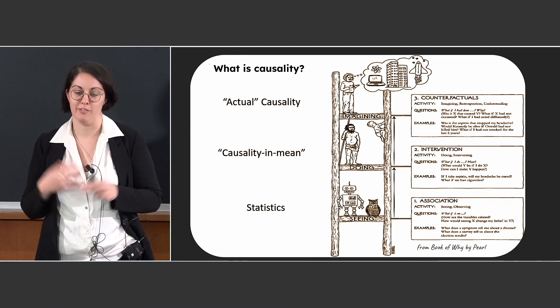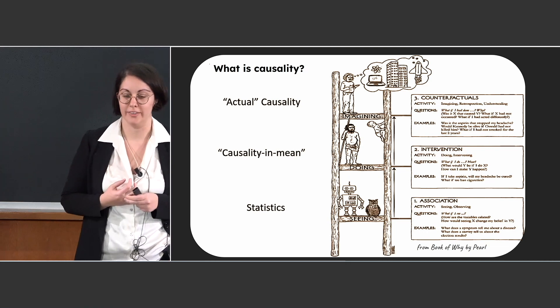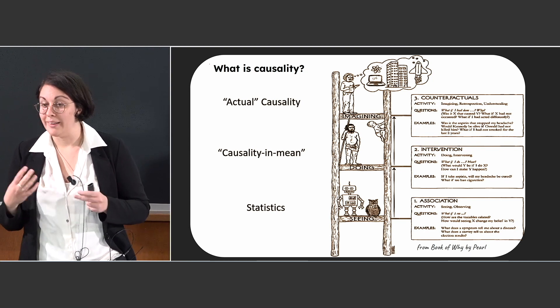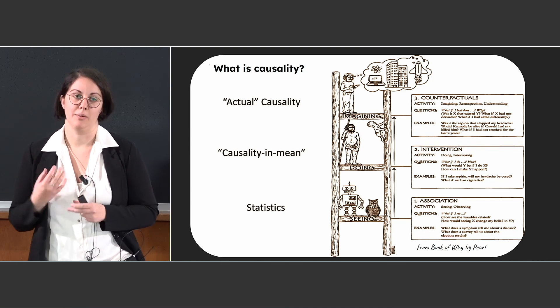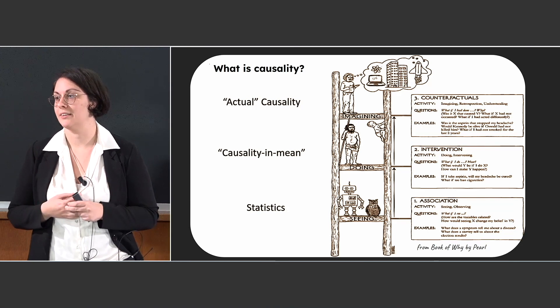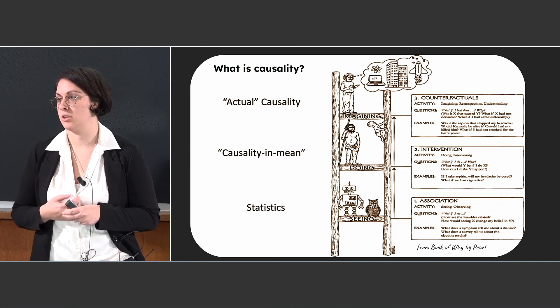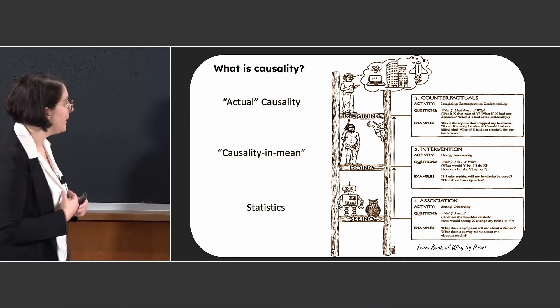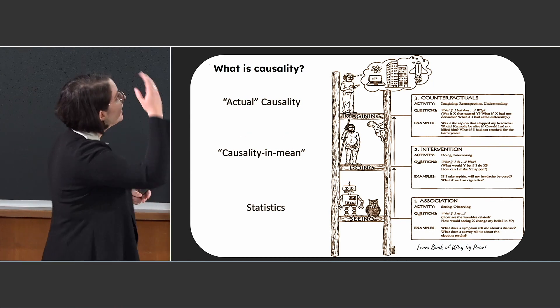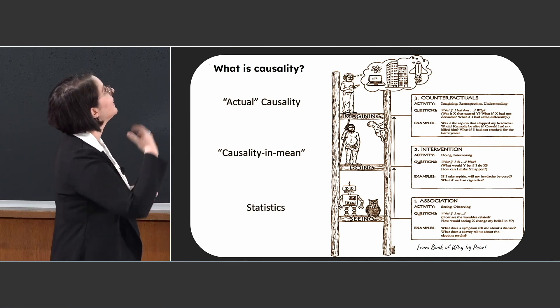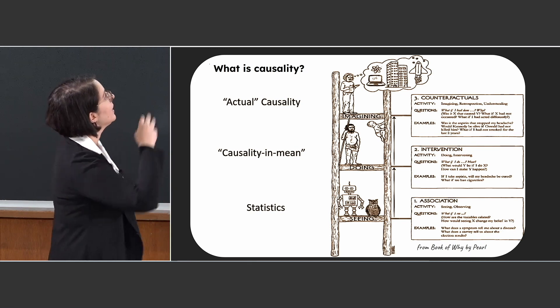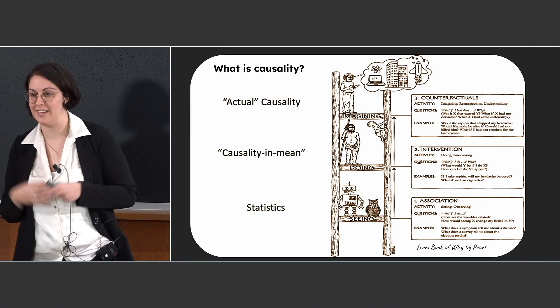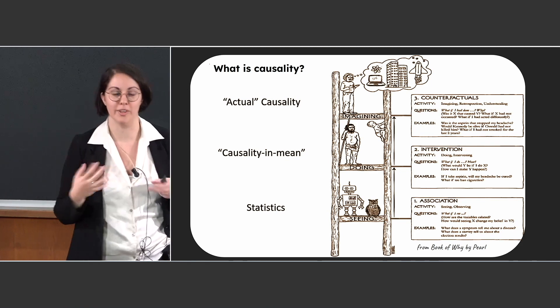So I start from defining the causality ladder of Judea Pearl, that is the main builder of causal model. All causal algorithms started with the inductive causation algorithm by Judea Pearl. And in this ladder we see different degrees of causal reasoning, that are paraphrased by seeing, doing and imagining, that can also be associated to what is the scientific reasoning on models and observation.